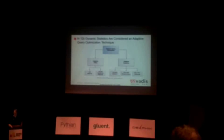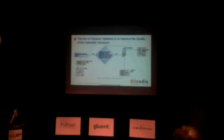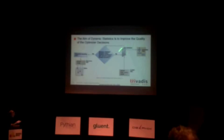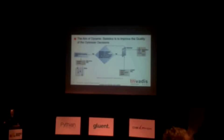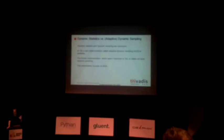That's how Oracle more or less positioned the feature. Dynamic statistics is basically what we have had since 9.2 with dynamic sampling — it's just a new name. Simply put: the optimizer, in some situation, if it doesn't find enough information in the data dictionary to generate a good execution plan, can execute some sampling queries that access the data and try to get insights from the data itself. It generates additional statistics during the parse phase, with the goal of generating a better — meaning faster — execution plan.